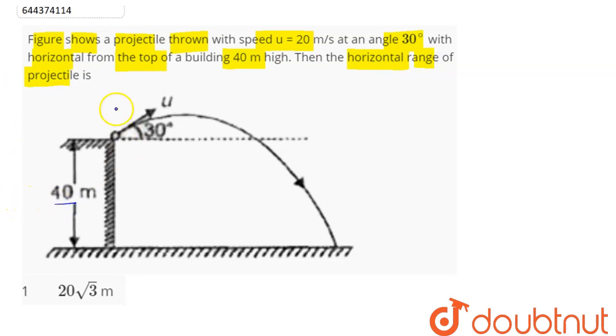40 meter. The y component of initial velocity is 20 sine of 30 degree. Sine 30 is 1 by 2, so this comes as 10. Displacement in y direction